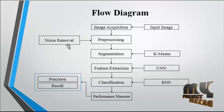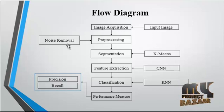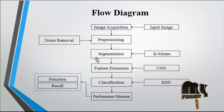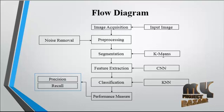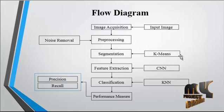The number of rows present in the image will be 256 and the number of columns will also be 256. After the image resize, noise removal is carried out using the Gaussian filtering method. After noise removal, segmentation is carried out using the K-means clustering method. By applying K-means clustering, the animal regions will be clustered and the background will be eliminated.